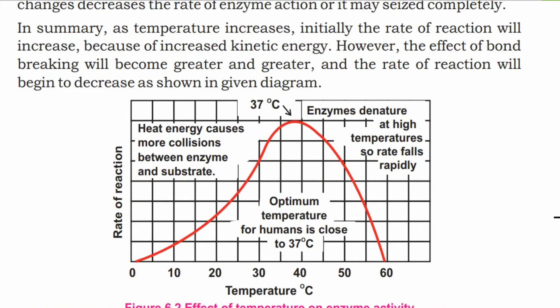In summary, as temperature increases, initially the rate of reaction will increase because of increased kinetic energy. But beyond the optimum temperature, the rate of reaction will decrease as shown in the diagram, because kinetic energy causes bonds to break and the enzyme structure is disrupted.